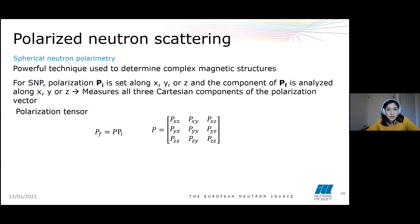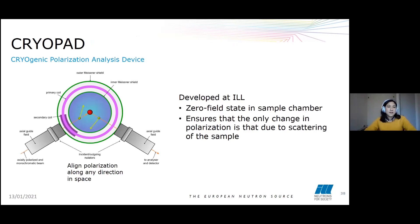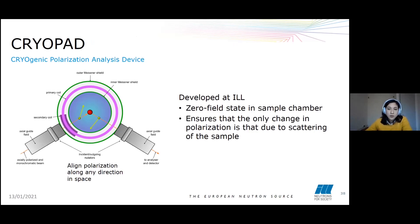One important constraint of spherical neutron polarimetry is that the incident and scattered guide fields must be independent of each other. For this, a device called the CRYOPAD — cryogenic polarization analysis device — was developed at ILL. It ensures that the chamber where the sample is located has almost zero magnetic field, so that any change in polarization is due only to the scattering by the sample.